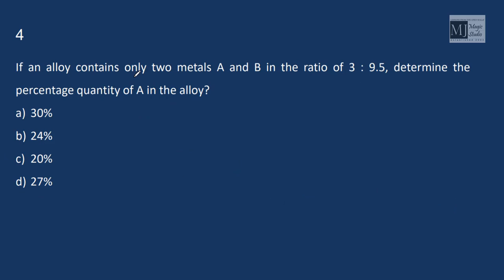If an alloy contains only two metals A and B in the ratio of 3 to 9.5, multiply it by 2, so it would be 6 is to 19. Determine the percentage quantity of A in the alloy. So this is A part, 6 by 25 into 100. That is 24% is A in the alloy.